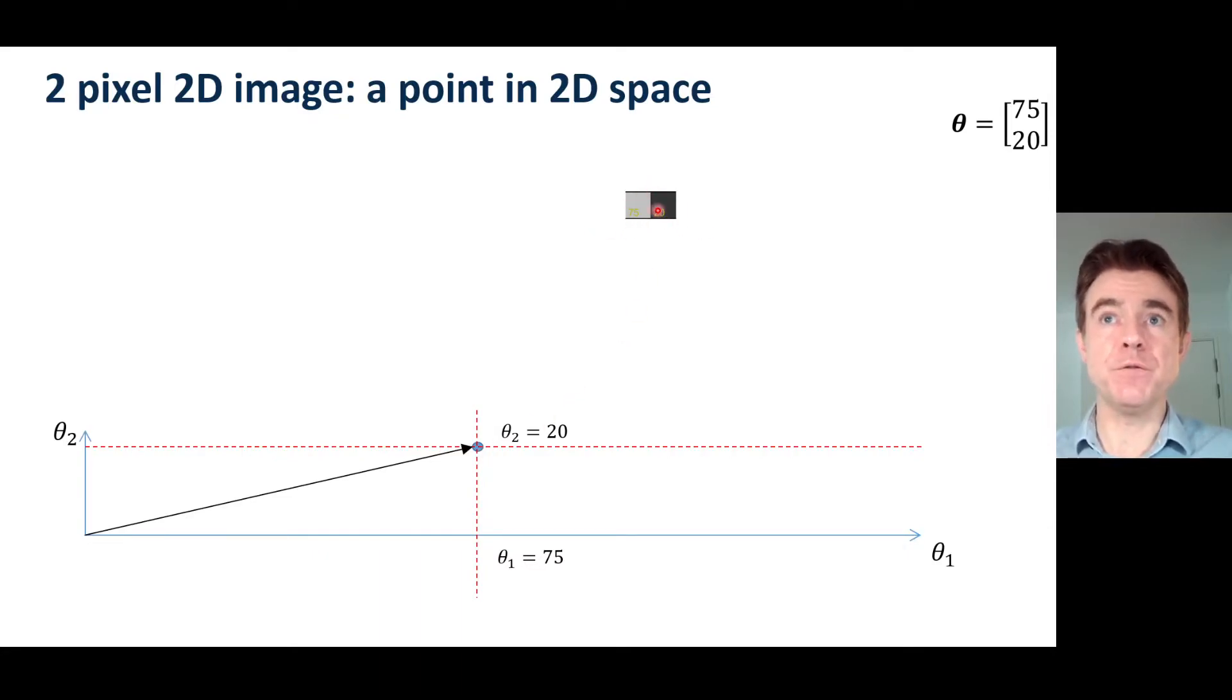And of course I could have many, infinitely many values for these 2 pixels and that would correspond to different positions in this theta 1, theta 2, 2-dimensional vector space. You can see I'm moving my cursor around here. Each position of that red cursor would correspond to a unique 2-pixel image according to the values of theta 1 and theta 2.